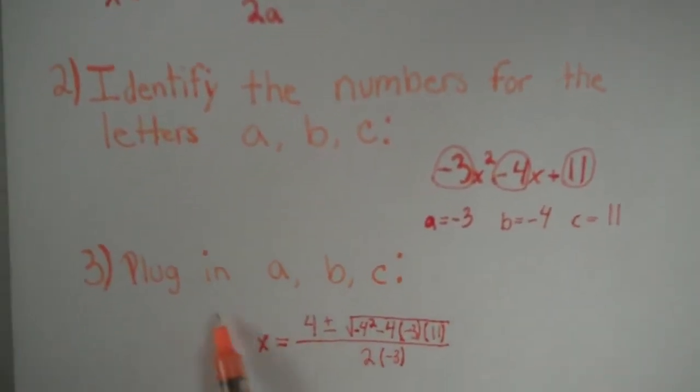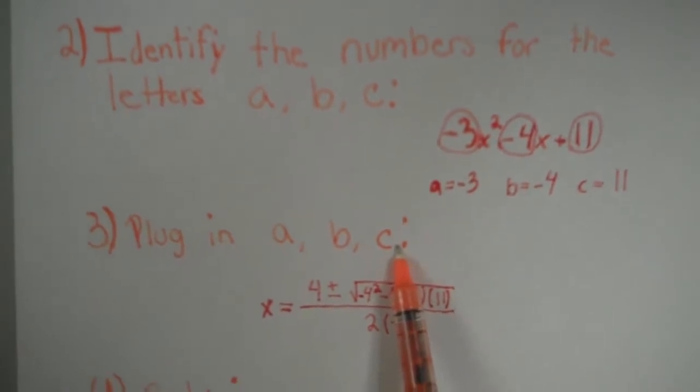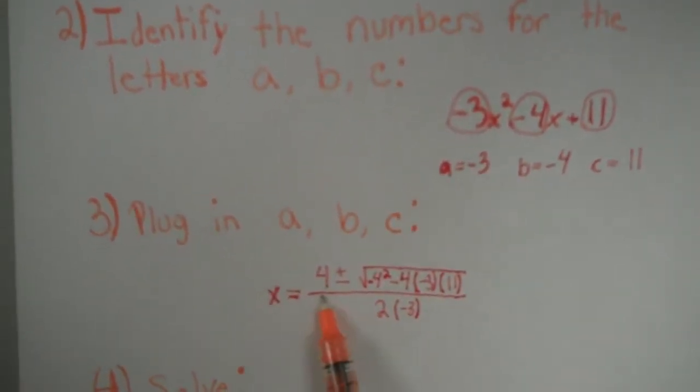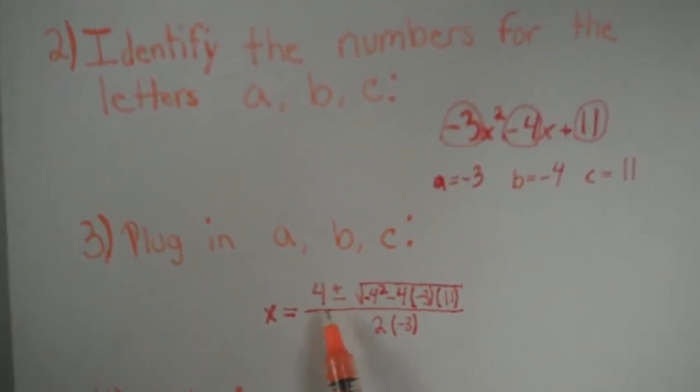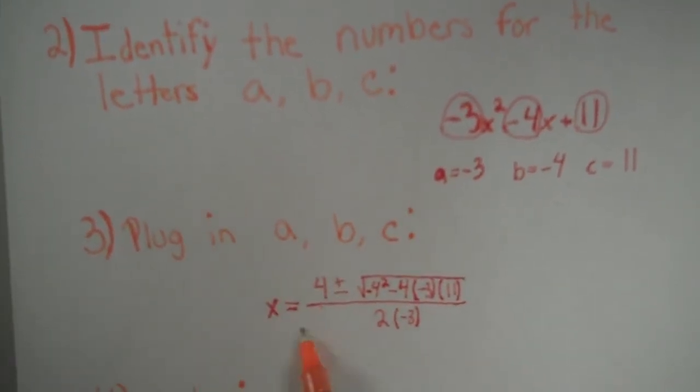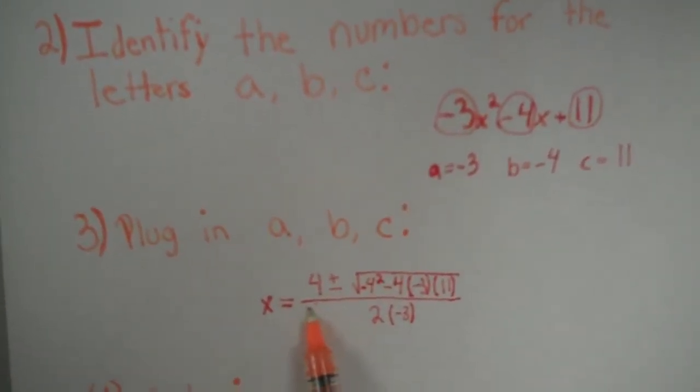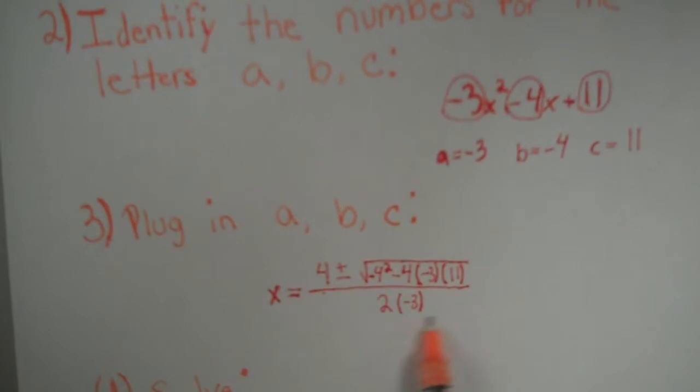Third step is to plug in a, b, and c. For b, I plugged in negative 4 but since it's already negative, it would become a positive 4. The rest I just filled in.